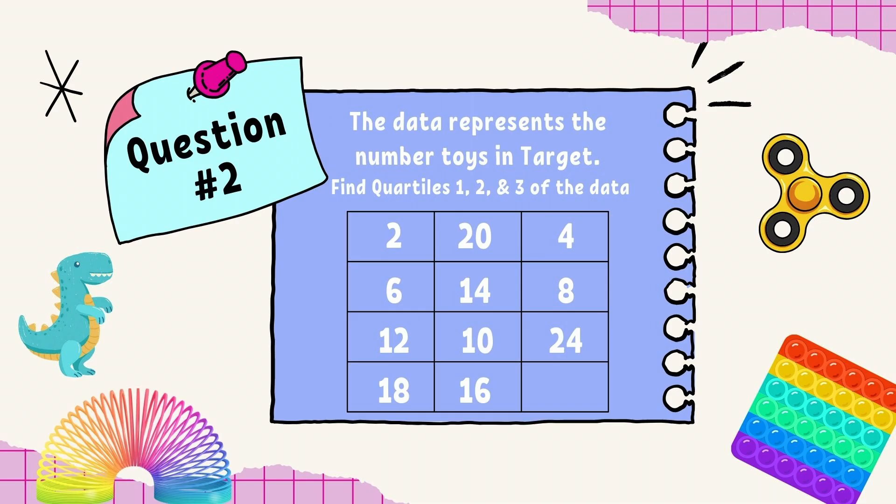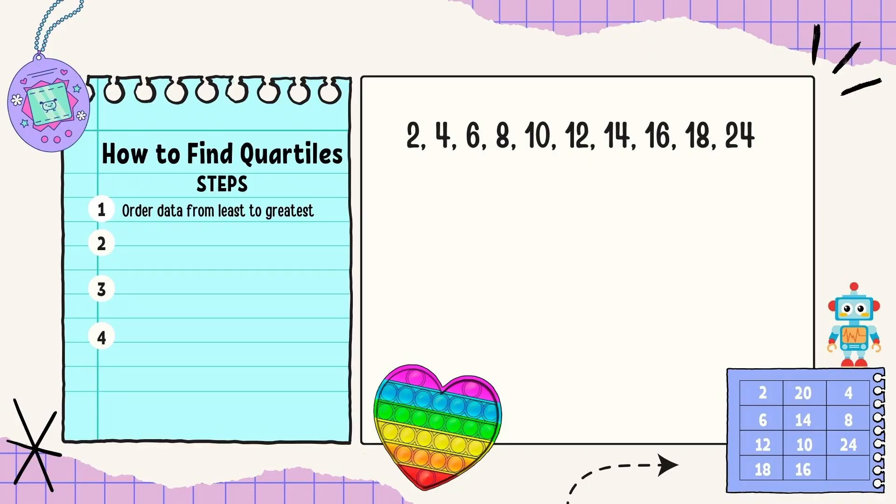Let's go ahead and do question 2, where you're going to have to split the median or find the average. So this data is going to represent the number of toys in target. Find quartiles 1, 2, and 3 of the data. Step 1, order the data from least to greatest. We have 2, 4, 6, 8, 10, 12, 14, 16, 18, 24.